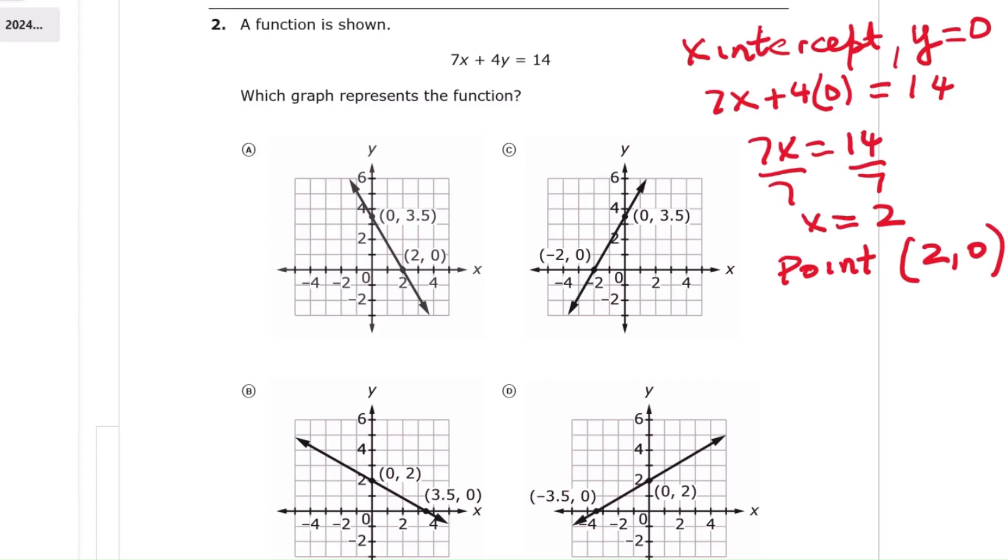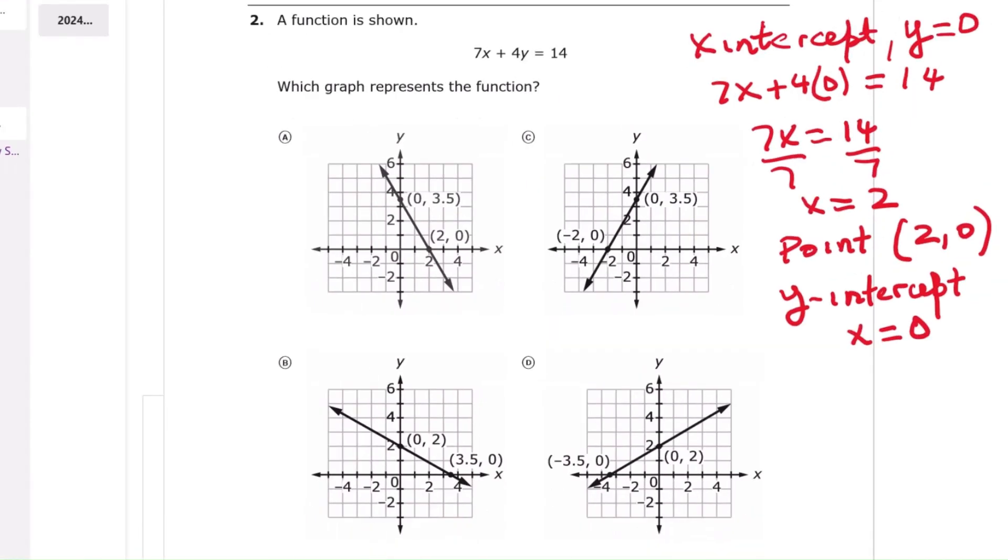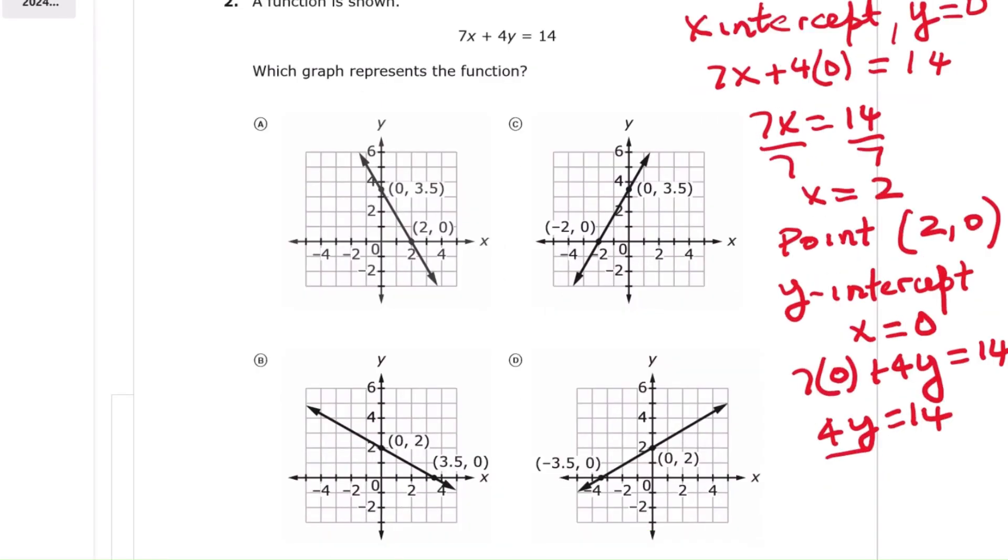So the x-intercept is the point 2, 0. The correct answer is choice A.